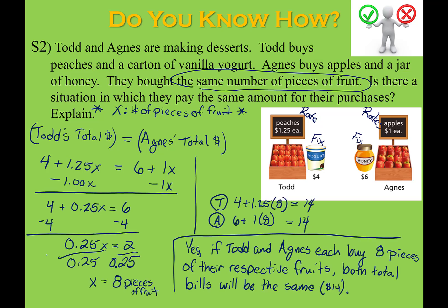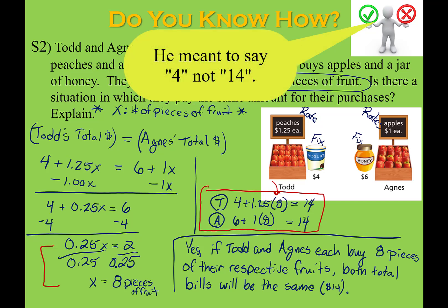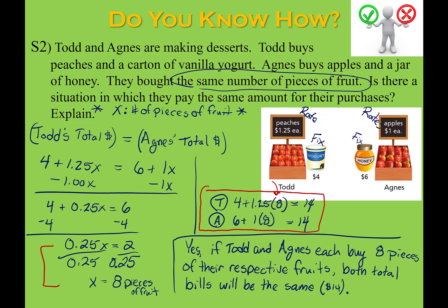You should have ended up with x equals 8. This is not a special case — they can end up with the same total cost, and there's one specific answer. Substituting 8 in: 8 times $1.25 plus $14 equals $24 for peaches, and 8 times $1 plus $6 equals $14 for Agnes. For eight pieces of fruit, both people end up with the same total, and the written description states that conclusion.